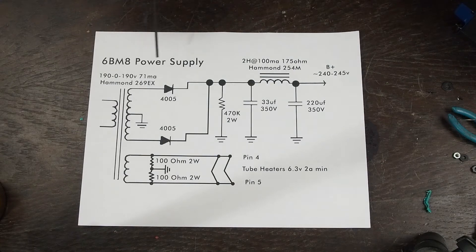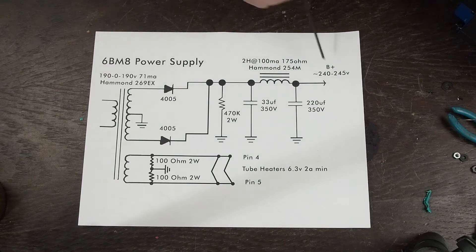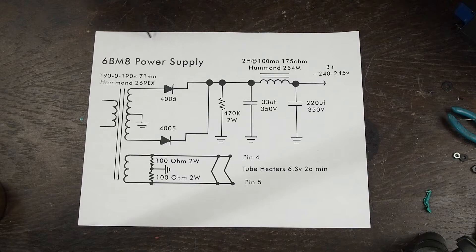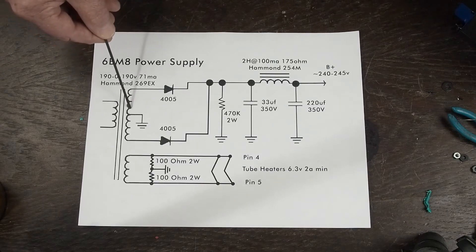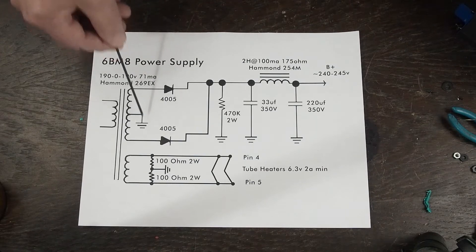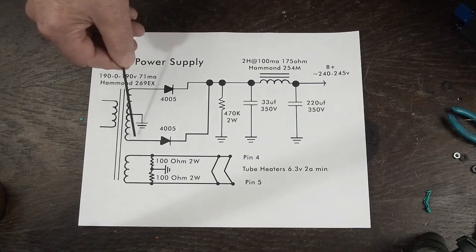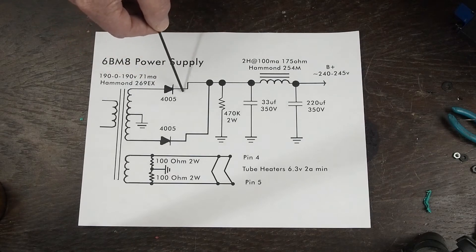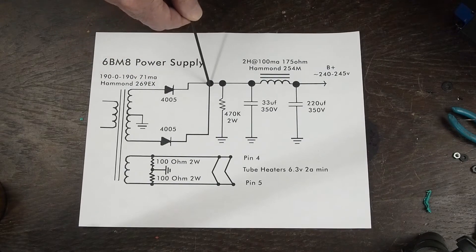The reason we're going full wave instead of a bridge is that we're able to get this B plus that we want out of a commercially available transformer that you can go to Mouser and order and get it within a few days. So the way this is wired up, the center tap of the transformer goes to ground and then each one of these other leads goes through a diode up to this connection point right here.